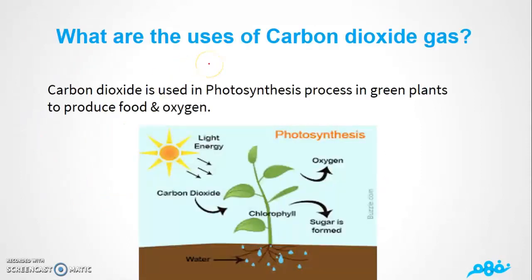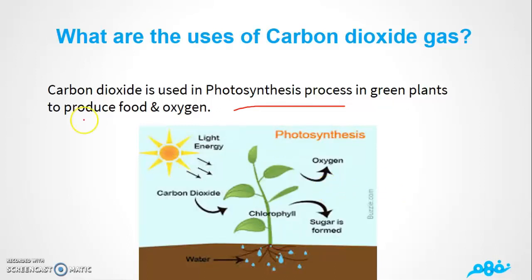Now we're going to talk about the uses of carbon dioxide. First, carbon dioxide is very important when it comes to the photosynthesis process. In green plants, we need it to do this process — after photosynthesis, the plant produces food and oxygen, which we use in the respiration process.